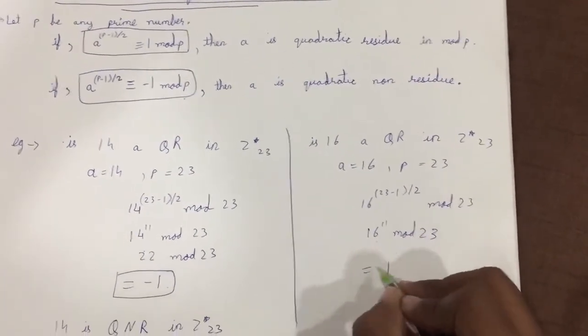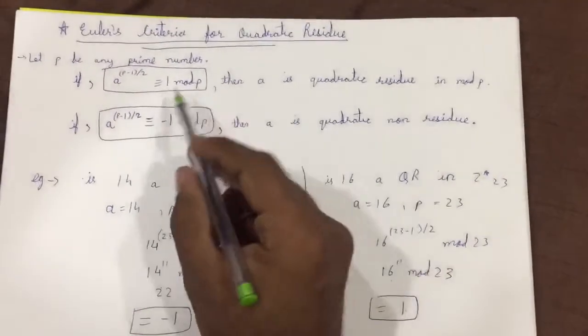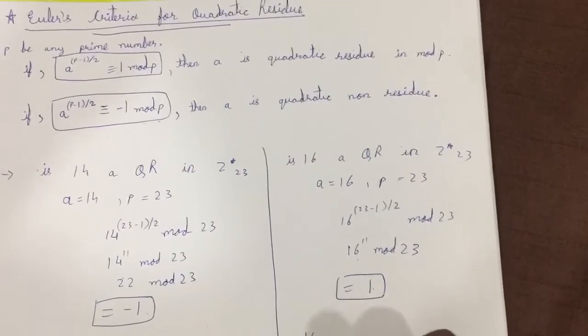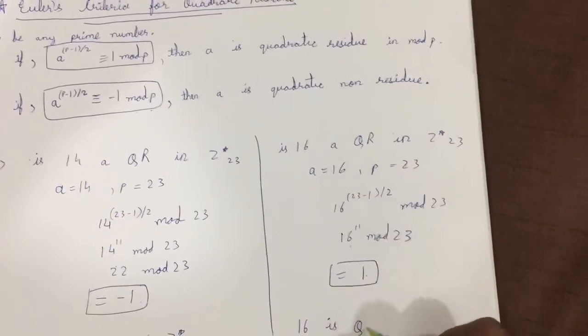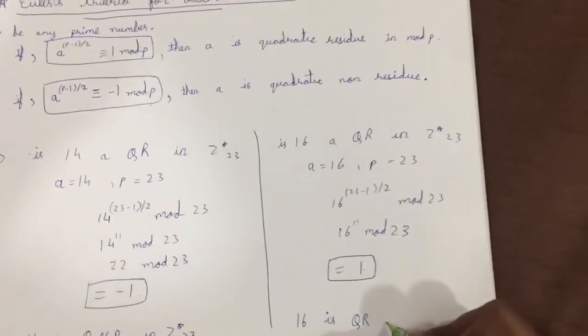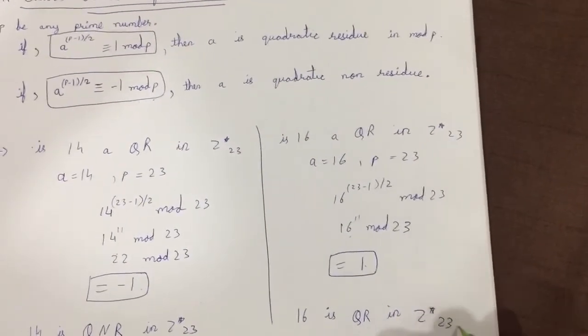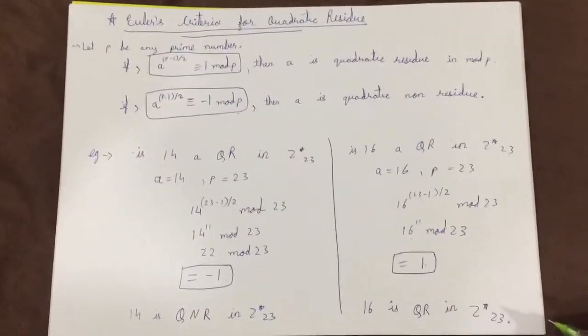If you solve this you would be getting your answer as 1. So according to the rule if it returns 1 it is a quadratic residue, so yes 16 is a quadratic residue in Z star 23. This was another easy method called Euler's criteria for quadratic residue.